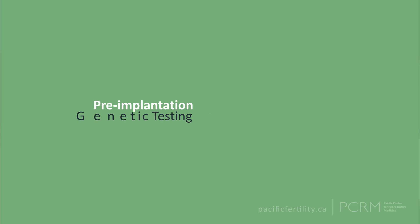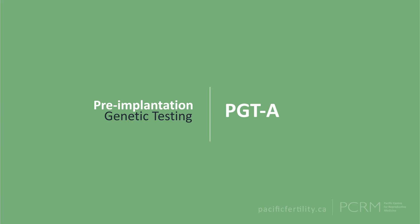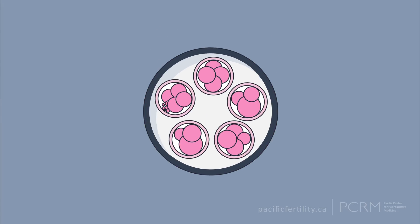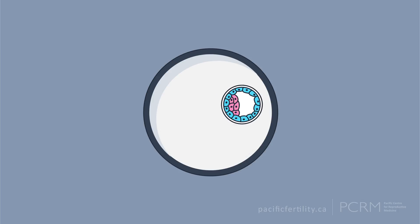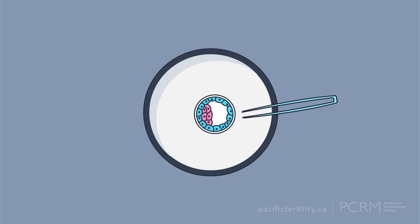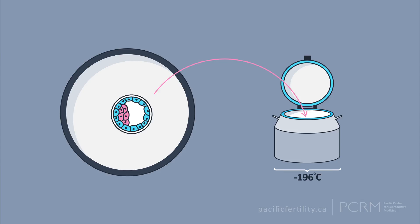This is pre-implantation genetic testing for aneuploidy, or PGTA. PGTA is the modern terminology, but in the past has also been referred to as PGS or CCS. Here's how it works: all good quality embryos that make it to the blastocyst stage by day 5 or 6 are biopsied. A few cells are removed from the trophectoderm, or placenta, of each embryo. Embryo damage is very rare. The embryo is then frozen and stored in the lab.